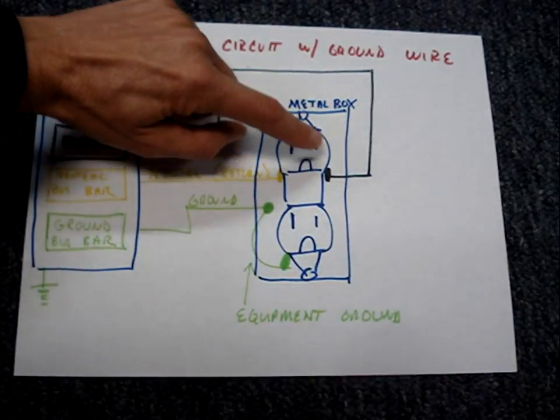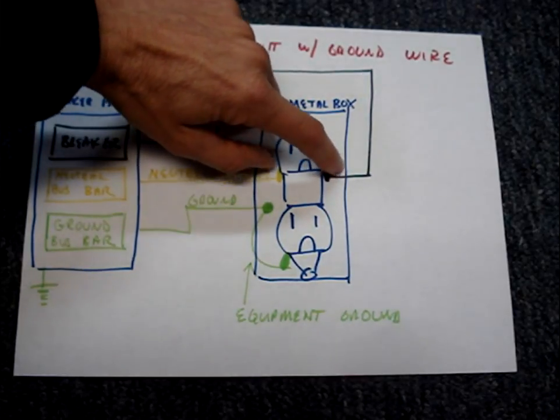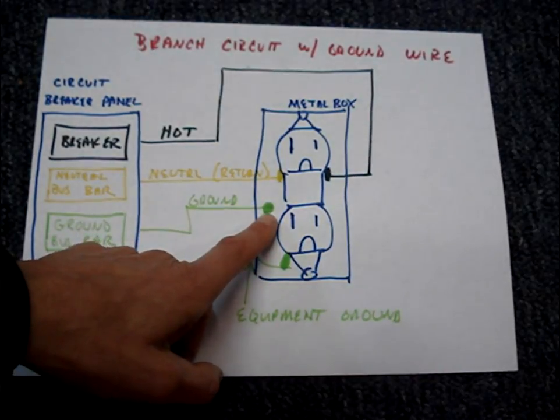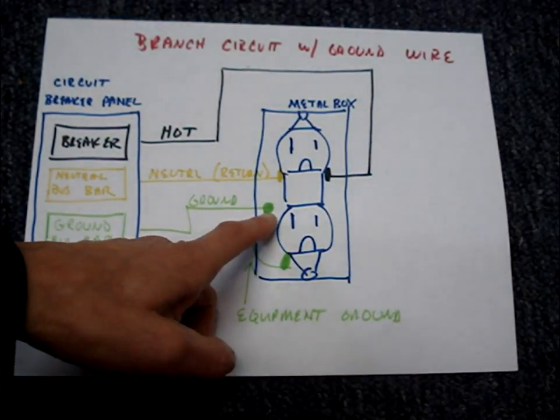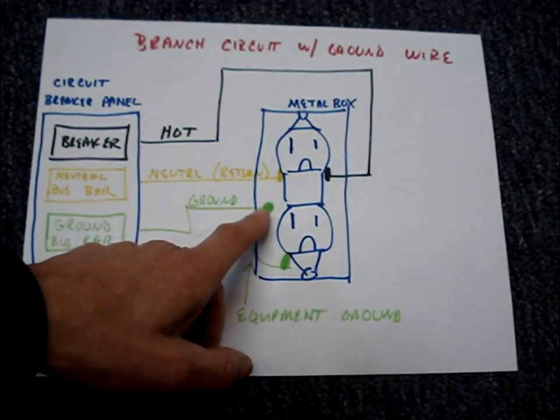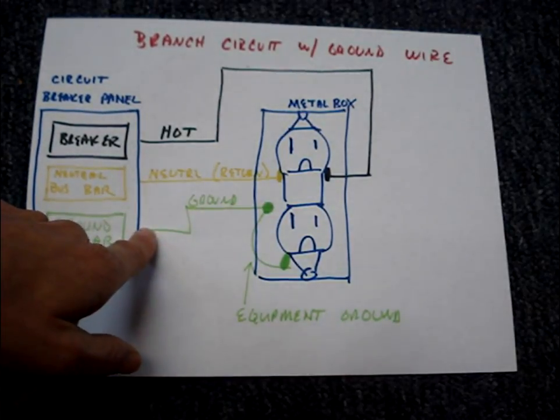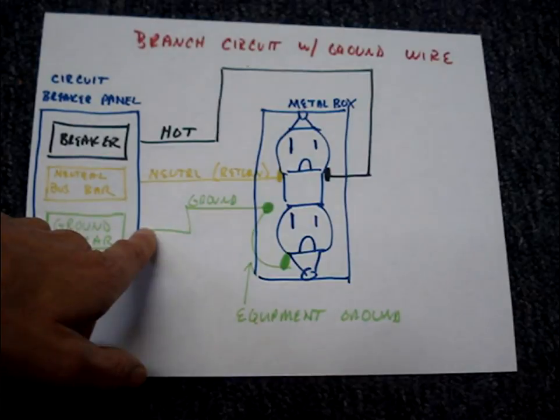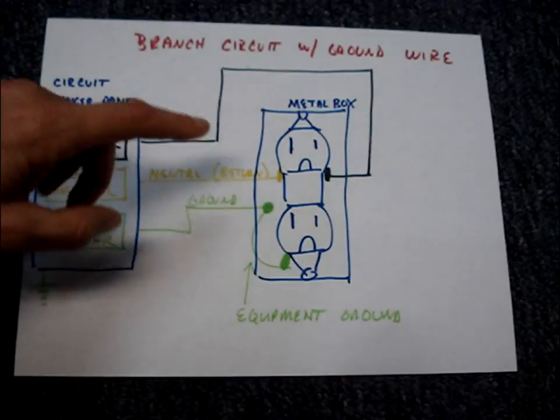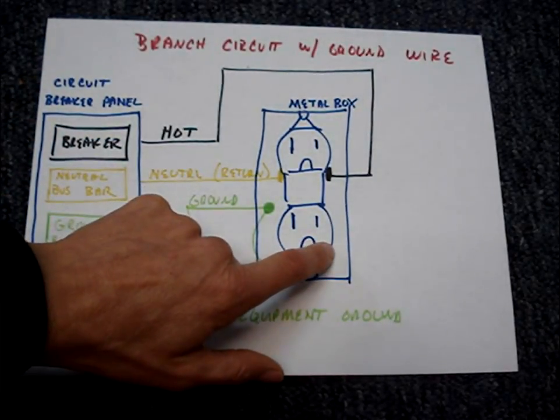It would create a direct short between the metal box and our lug that's holding on the ground wire, and the current would travel back to the breaker on this ground wire. There would be a high current situation that would trip the breaker and turn power off to the circuit and make the metal box safe to touch.